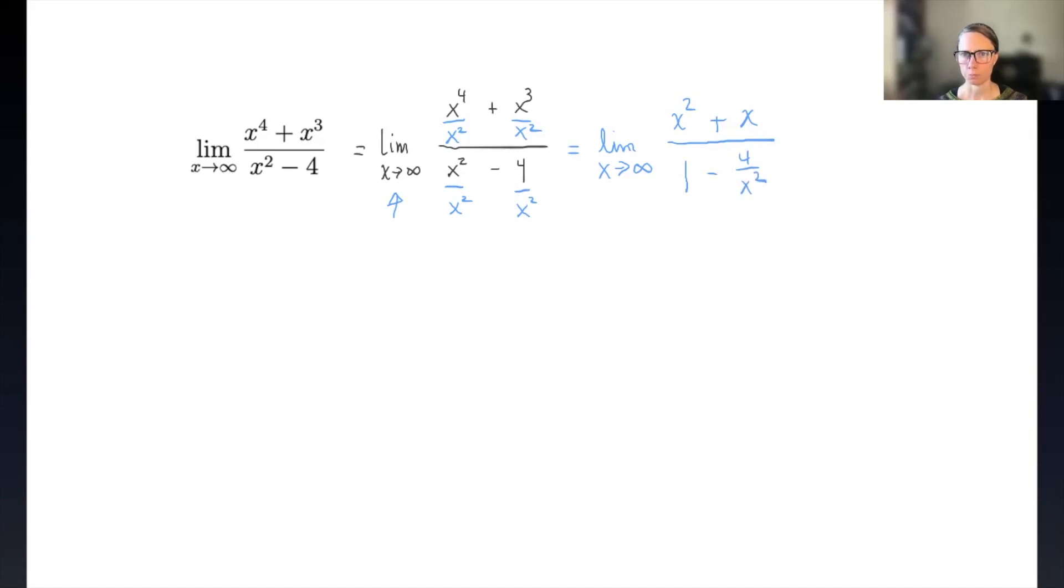Now we can think about each piece and what is happening, and this is where this technique really comes into play. Notice that this 4 over x squared term, as x gets huge, 4 over x squared shrinks to zero. And if you're not really comfortable with that, go back and review the previous Desmos slides to play around with 1 over x or 1 over x squared or 1 over x cubed to get a sense of what happens as x gets large.